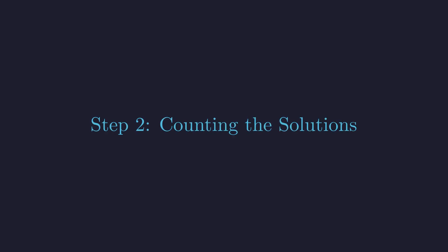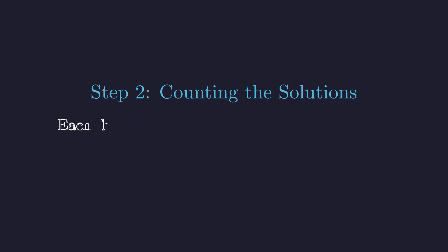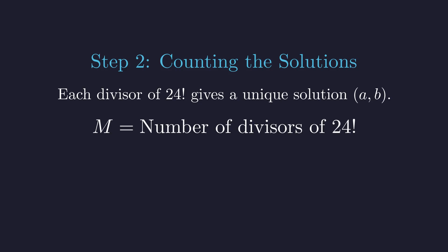This insight is about to unlock the entire problem for us. Here's the beautiful part. Each divisor of 24 factorial gives us exactly one valid pair. Pick any divisor as your B, and there's exactly one corresponding A that works. It's a perfect one-to-one correspondence. This means our answer M is simply the number of divisors that 24 factorial has. Mathematicians have a nice notation for this. D of N means the number of divisors of N. So we've transformed our original problem into something much more concrete: count the divisors of 24 factorial.